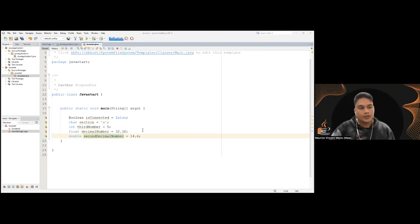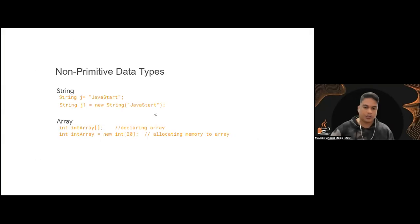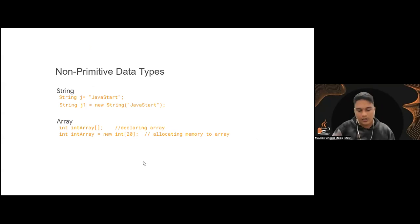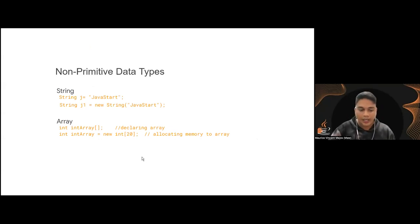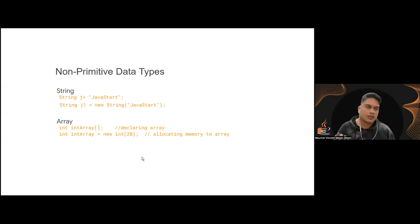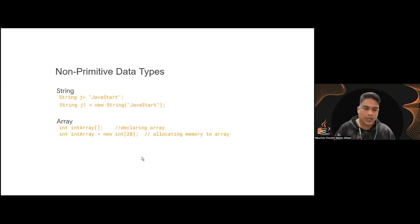Next, we have non-primitive data types. There are many, including classes, interfaces, linked list, and array list. But for the basics, we will only be talking about string and array.